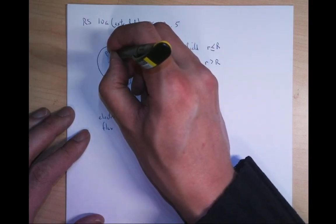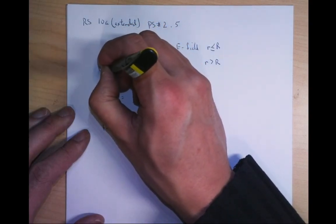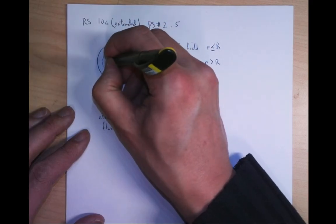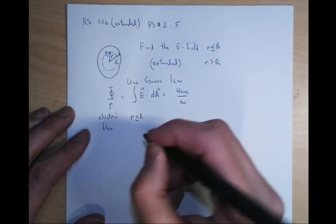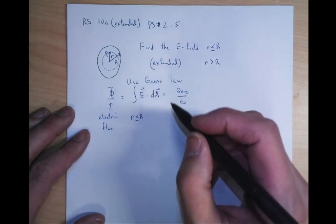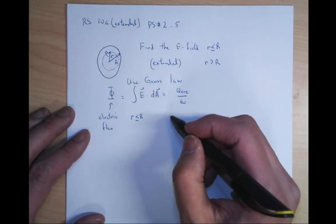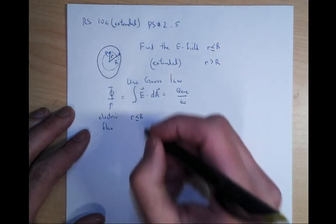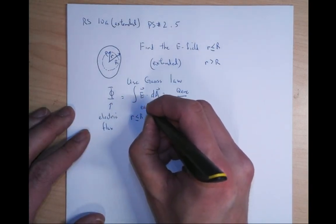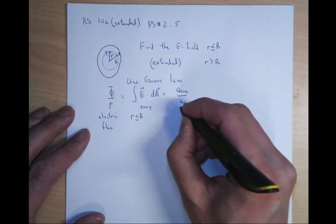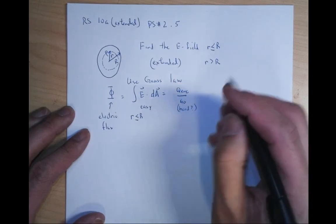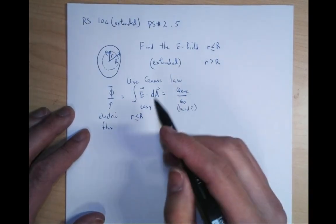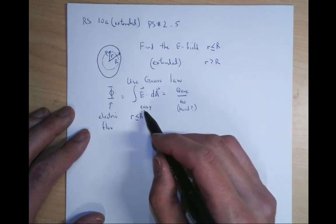We're going to have r less than R. There is my Gaussian surface, and this has a radius r. Gauss's Law relies on the fact that the left-hand side has to be easy, and the right-hand side could be hard — because it's not always hard. In this case it is actually slightly hard, so we're going to be careful.